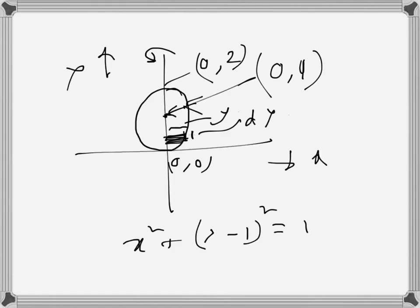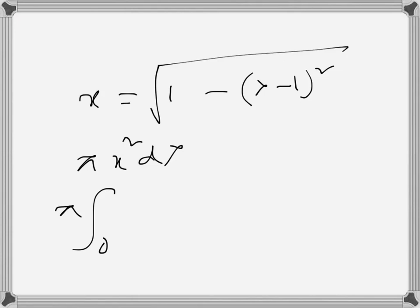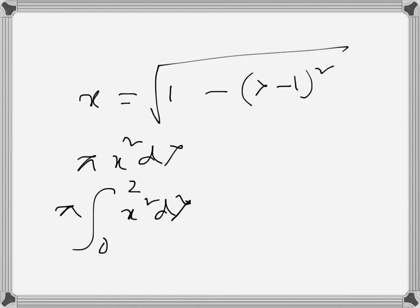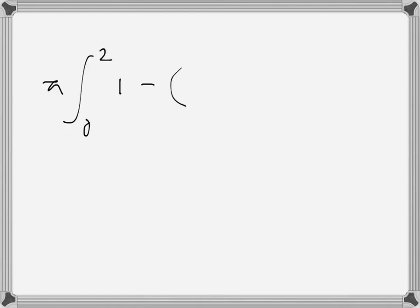So we will integrate it from 0 to 2 to find the total volume. So x²·dy, the variable is y, so we will rewrite in terms of y. So 1 - (y-1)².